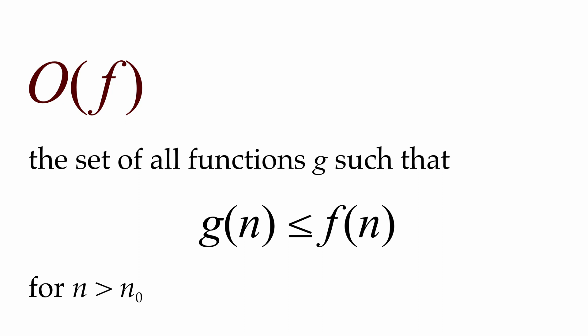In other words, eventually we'll get past the few input sizes where g(n) is bigger, and at that point f(n) will be bigger. Next, if two algorithms' running times differ by just a constant factor, that's not really anything to do with their intrinsic rate of asymptotic growth. We want to focus on characterizing how functions grow independent of those constants. So instead, we'll say that g(n) is less than or equal to some constant c times f(n).